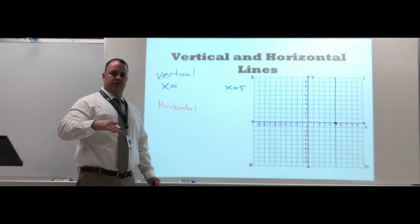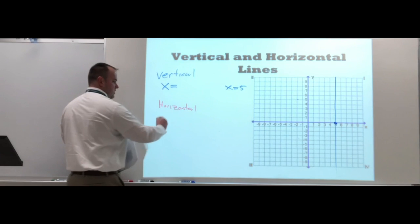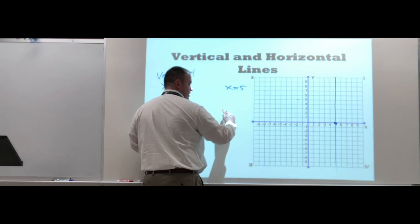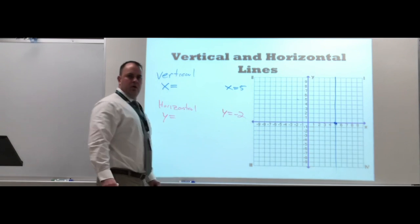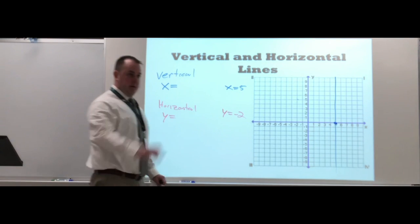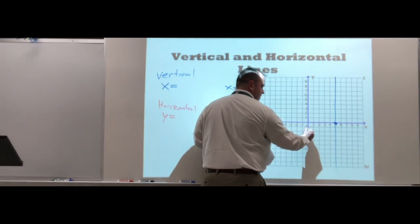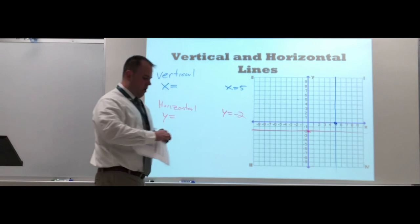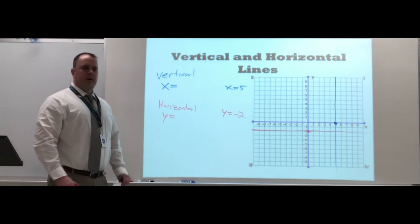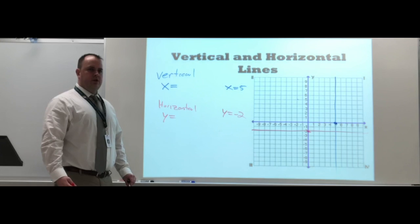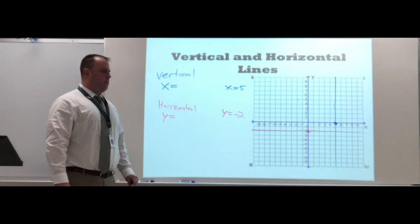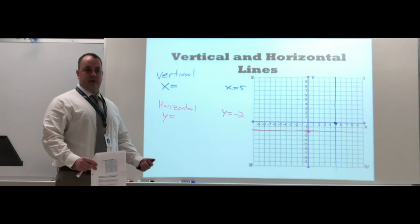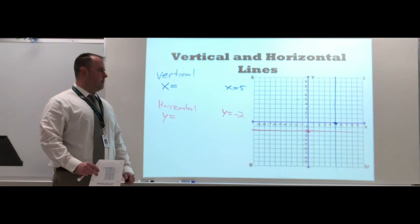For a horizontal line going across, every horizontal line hits the y-axis, so the equation is y = c. For example, y = -2 means it crosses the y-axis at -2. Draw a horizontal line through that point. That covers graphing for section 2.3. The second part will deal with x and y intercepts — how to identify them and use them to graph.